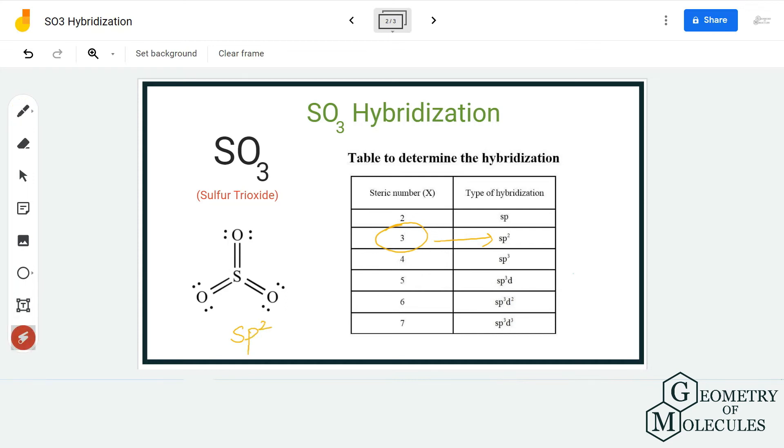That is because each sigma bond will occupy one of the orbitals which results in the SP2 hybridization of the sulfur atom. So sulfur atom will have SP2 hybridization for all these three atoms of oxygen.